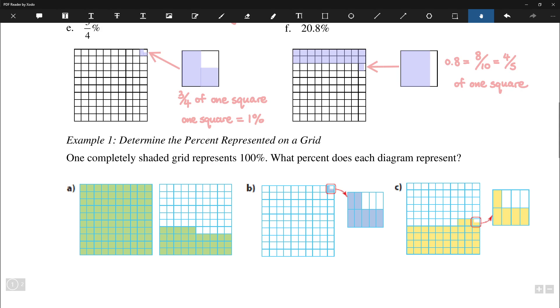So let's consider the next piece, which is given these grids here, what percent does each diagram represent? So here we have a full square. So that's 100%. And then over here, we have 35 more squares shaded in. So this would be 135% in total. Looks just like the example from above.